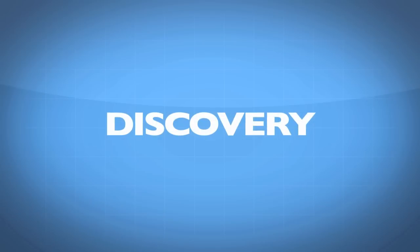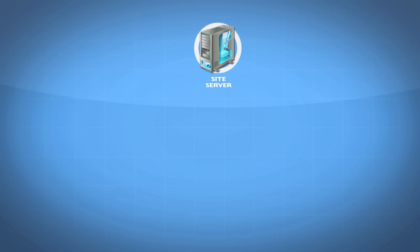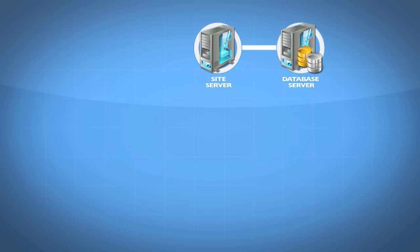Let's go ahead and diagram this process. At the center of our site is our primary site server, which is connected to the database. In the database is information about everything — all of the configuration as well as the information about discovered devices. Every single computer that is either a client or is simply a discovered device will have a record in the database. We have tables full of information about devices on our network.